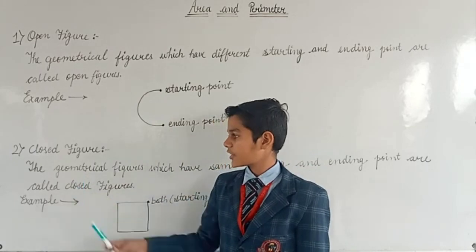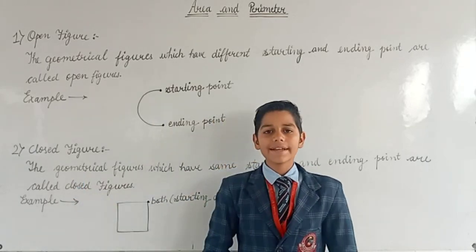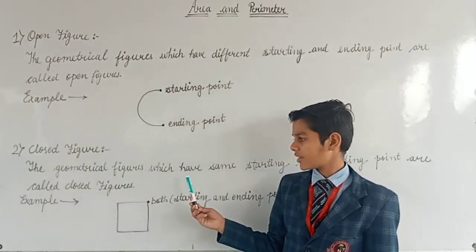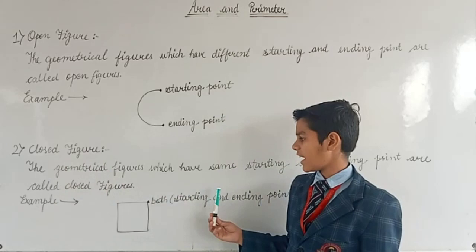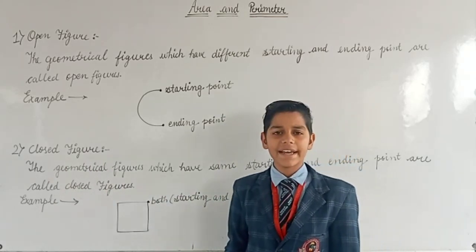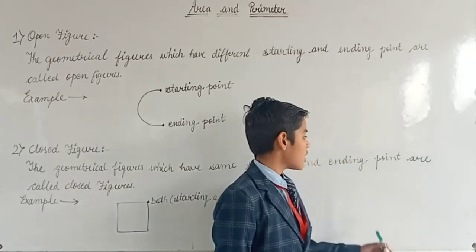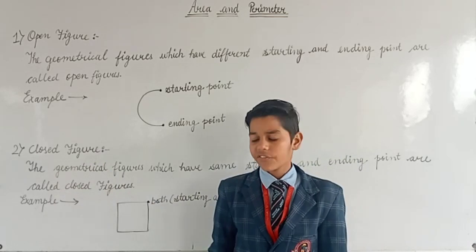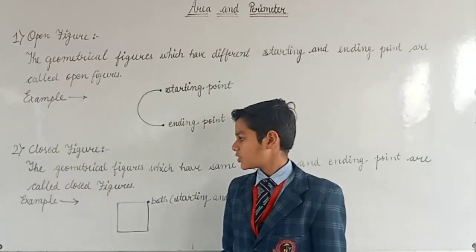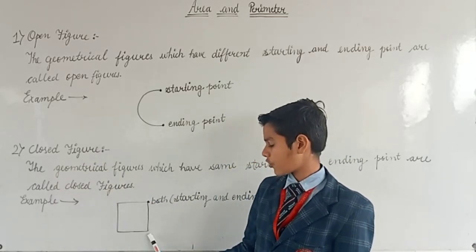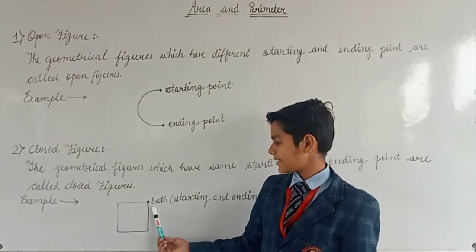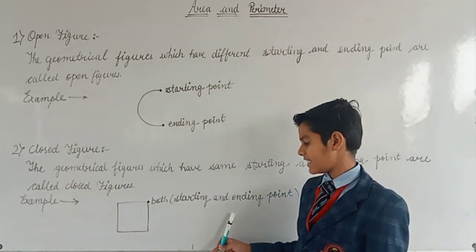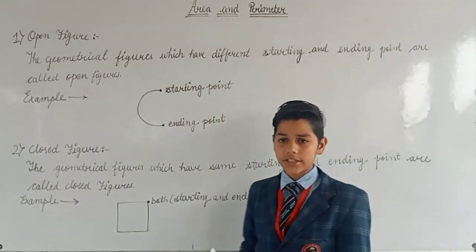So now, what is a closed figure? The geometrical figures which have the same starting and ending point are called closed figures. For example, this is a square — it has the same starting and ending point.